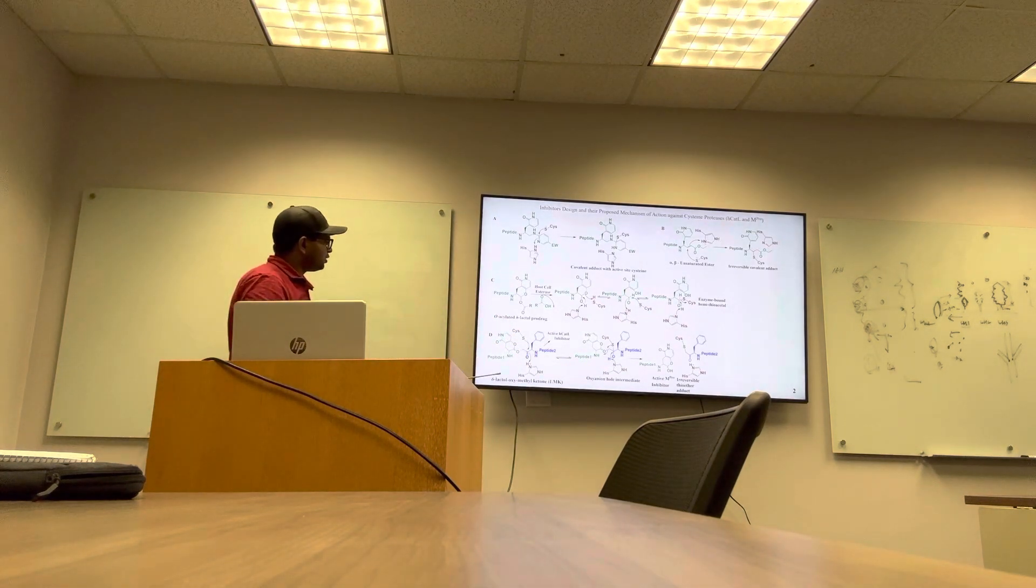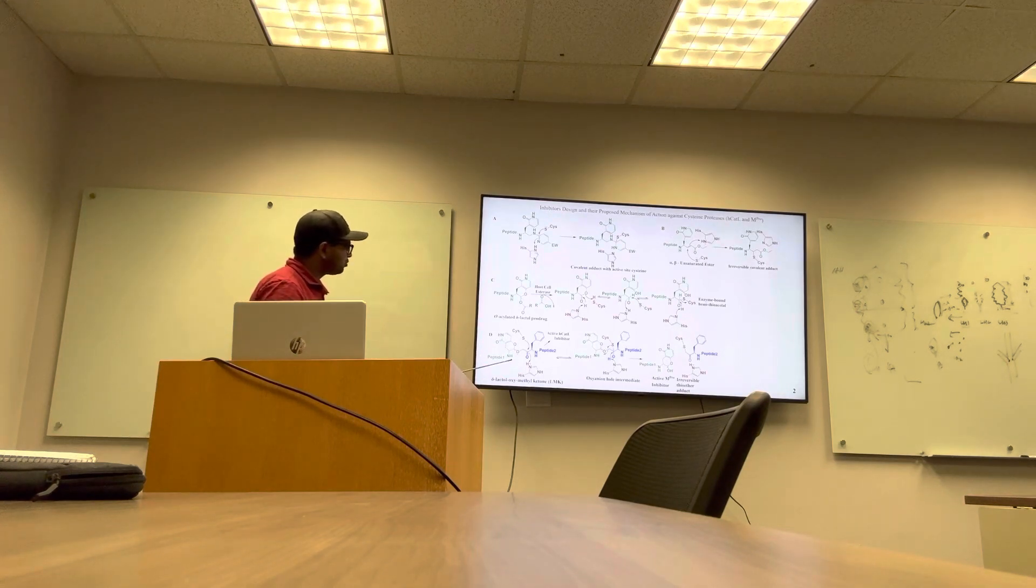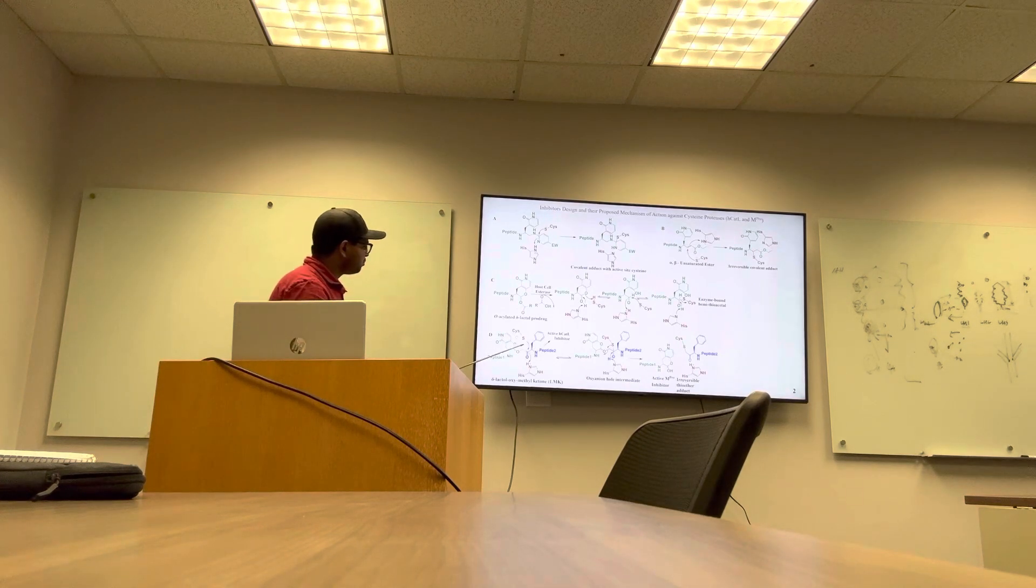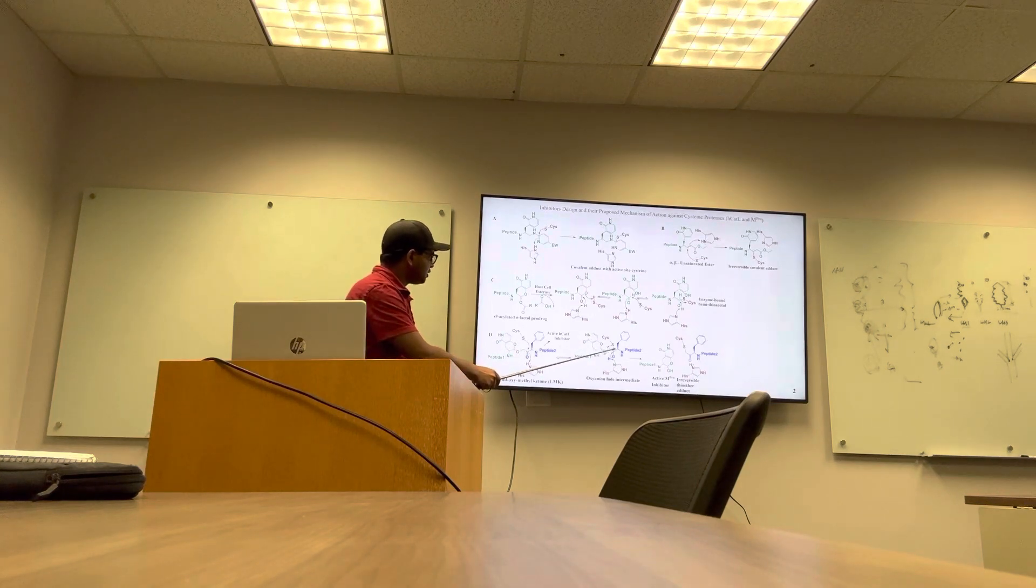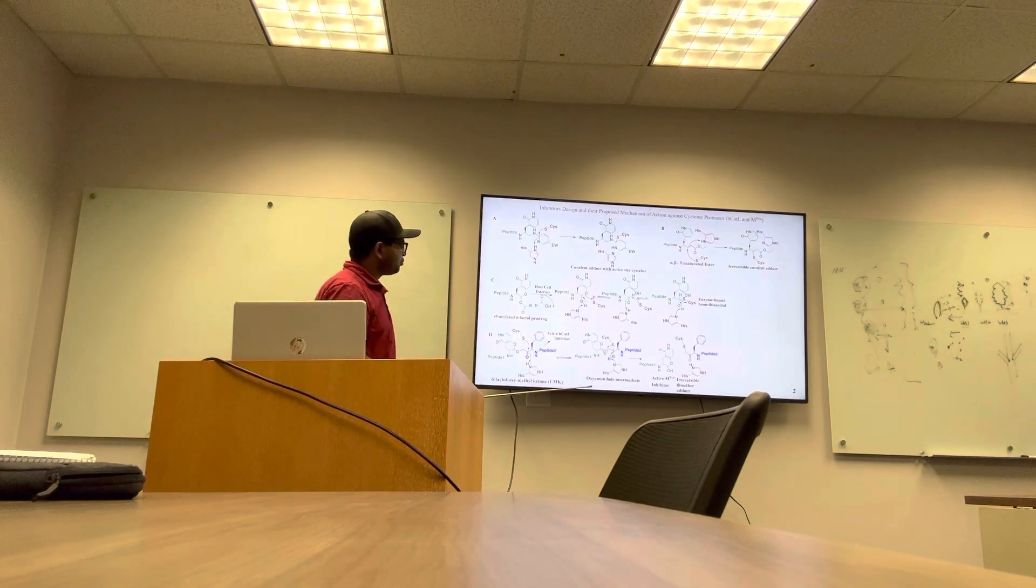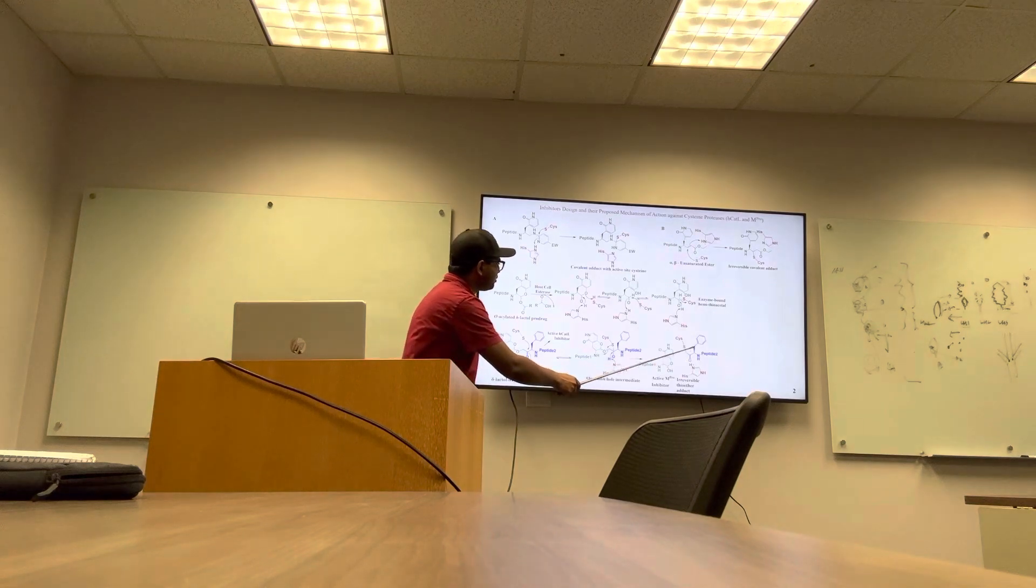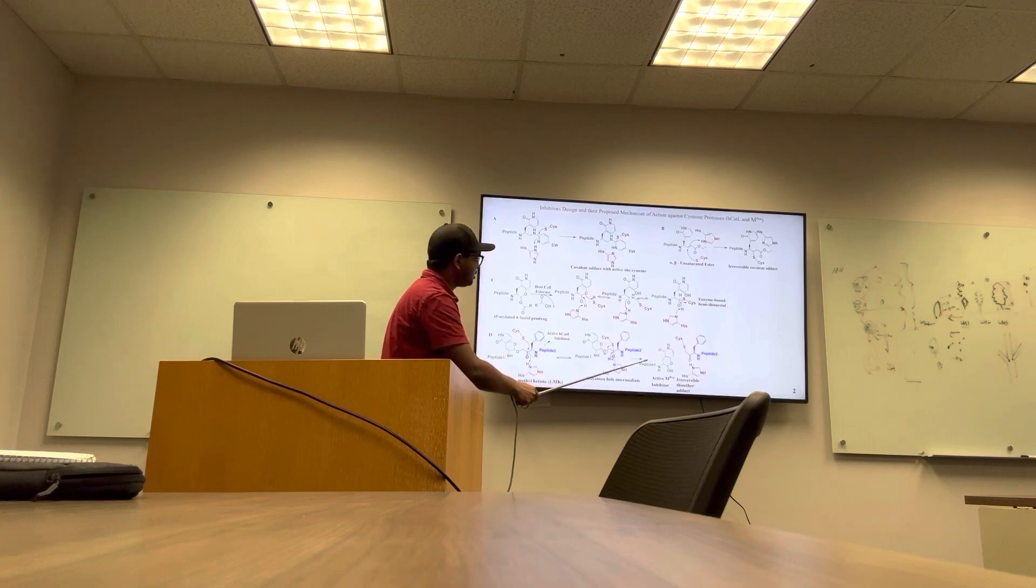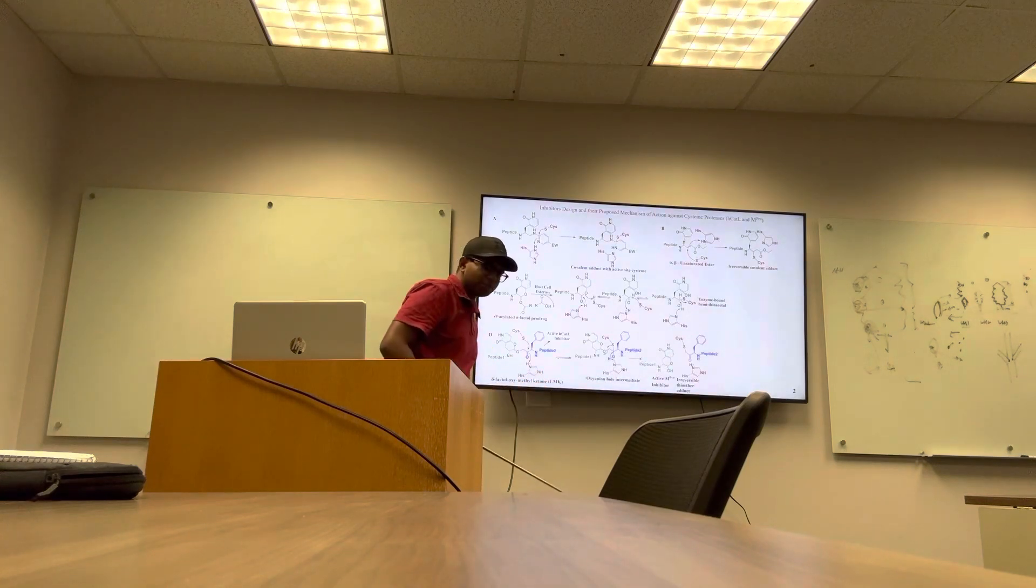Fourth is delta-lactol oxymethyl ketones. This is an alkylated version of prodrug for delta-lactols, where LMK is built using H-cathepsin recognizable scaffold such that when this inhibitor binds to H-cathepsin active site, the cysteine attacks the acyl carbonate, forms reversible hemithioacetal, and upon further rearrangement forms irreversible thioether adduct with H-cathepsin. When this happens, the active delta-lactone based drug, which is M-pro active drug, will get released in the cell.